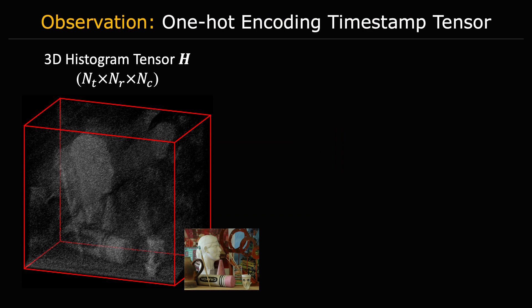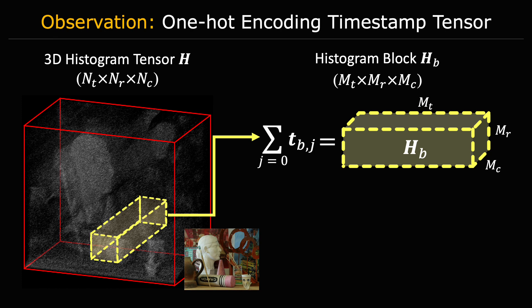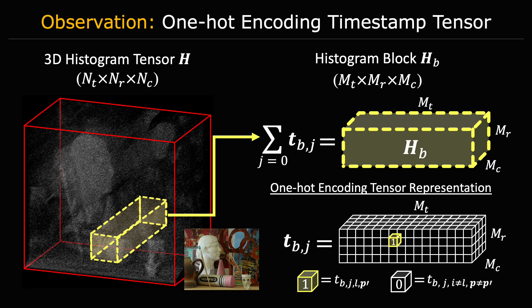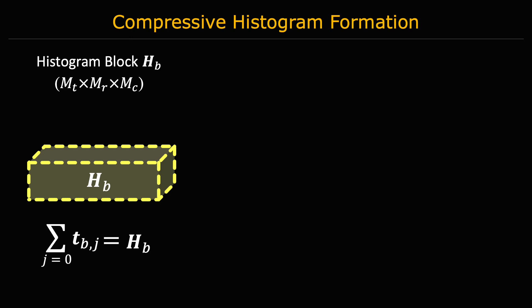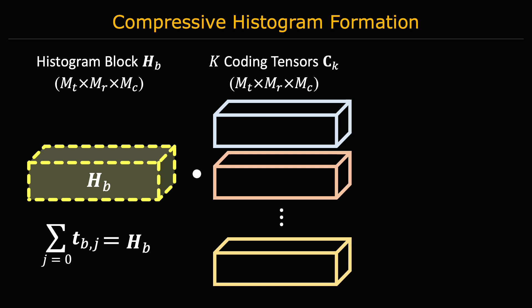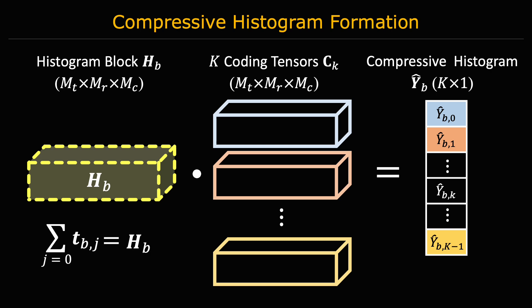To tackle this problem, let's first look at the 3D histogram tensor representation which encodes distances along the time axis. Consider a 3D block of this sensor. We observe that this block can be written as the sum of timestamps using a 1-hot encoded representation. The 1-hot encoded timestamp will be a 3D tensor where all elements are zero except for a single one, which corresponds to the spatiotemporal location of the detected photon. Using this representation, a compressive histogram can be built in an online fashion: as each timestamp is detected, we can apply k coded projections to the timestamp and accumulate the encoded values in a compressive histogram with k elements. Although this operation appears expensive at first, since each timestamp only has a single non-zero element, these coded projections reduce to a simple lookup operation.